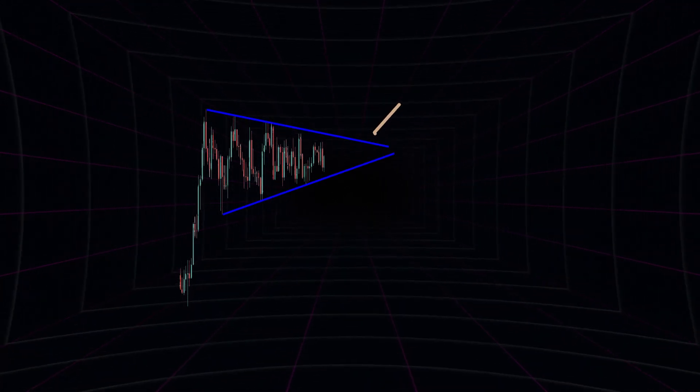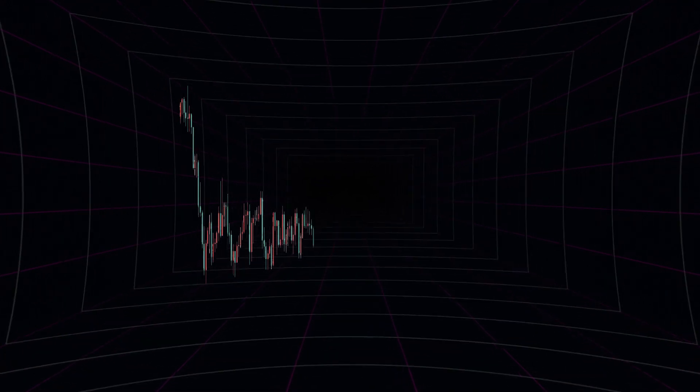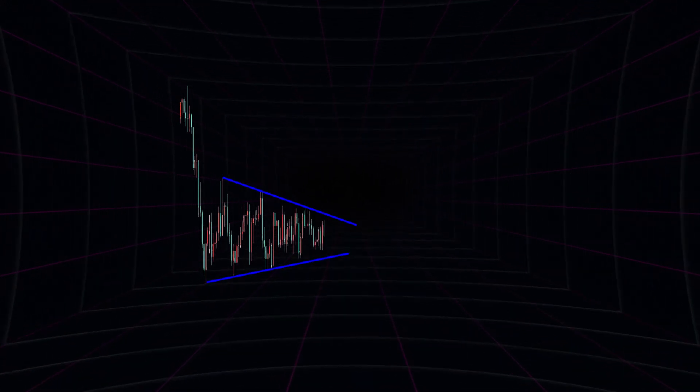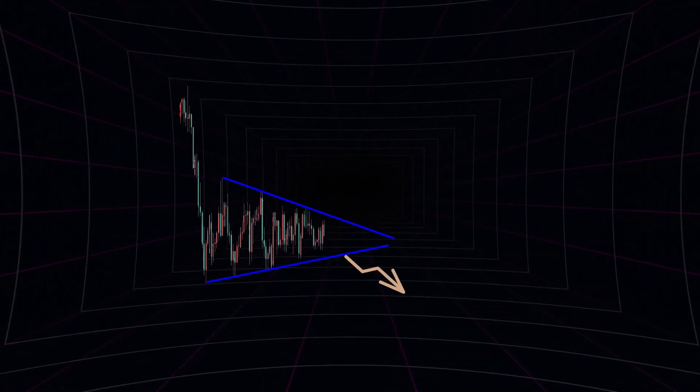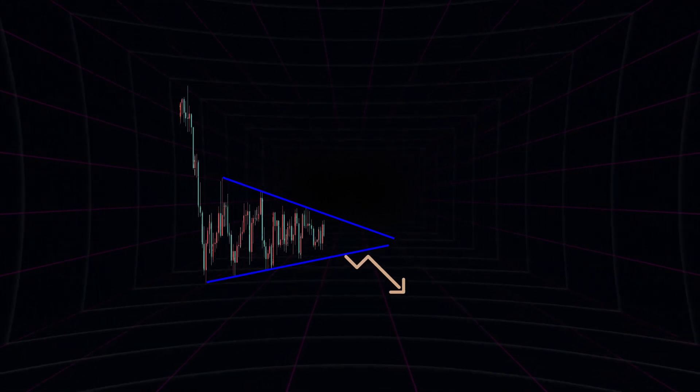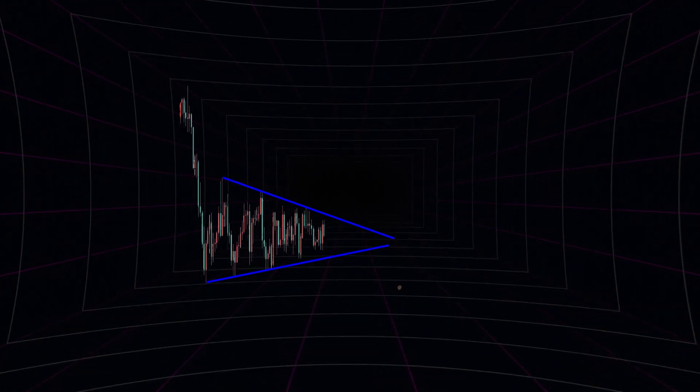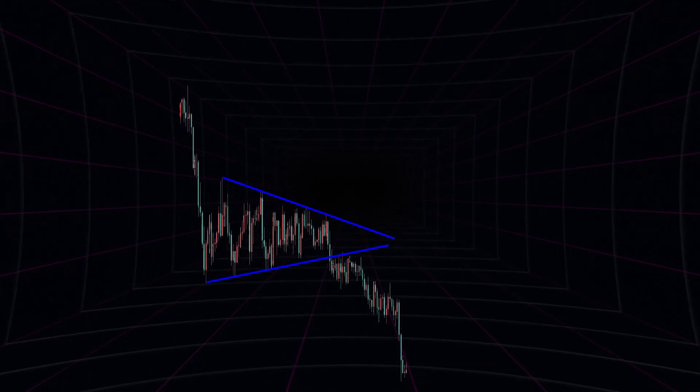An ascending triangle is considered a bullish pattern, since prices are increasing. A descending triangle is formed when prices are moving down, forming a descending trend line. In this case, the closing price is moving down but the opening price is moving up, forming the triangle. A descending triangle is considered a bearish pattern, as prices are declining.